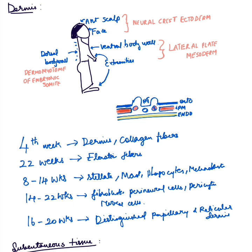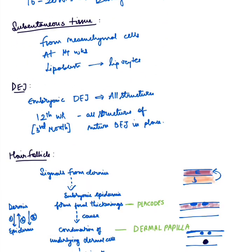Regarding the developmental timeline of the dermis: by the fourth week, dermis formation begins — it is very cellular and collagen fibers become detectable. By 22 weeks, elastic fibers develop. By 16 to 20 weeks, the dermis becomes distinguished into papillary and reticular dermis. Stellate cells, mast cells, phagocytes, and melanoblasts are derived during the 8th to 14th week, while fibroblasts, perineural cells, pericytes, and Merkel cells are derived during the 14th to 22nd week of embryonic life.